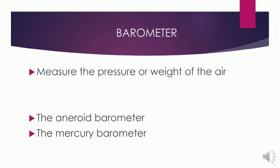Barometer. This measures the pressure or weight of the air and is probably the most important instrument for forecasting the weather. There are two kinds of barometers: the aneroid barometer and the mercury barometer. Let's discuss each barometer.